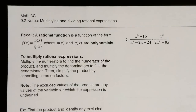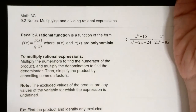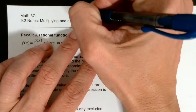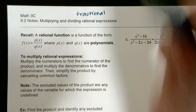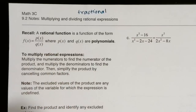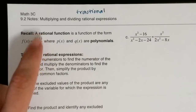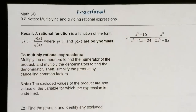We're going to do multiplying and dividing rational expressions today. A lot of times the word 'rational' is confusing, but a helpful hint is that it sounds like 'fractional' — and that's exactly what a rational expression is: it's a fraction. The formal definition is that you take two polynomials and divide them, giving you a rational function or fractional function.